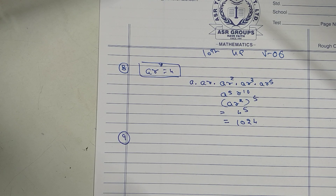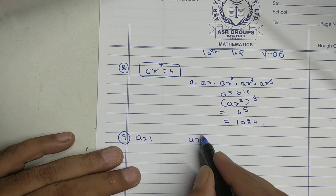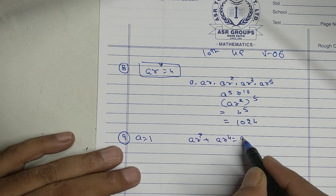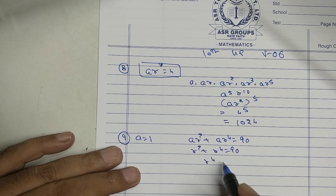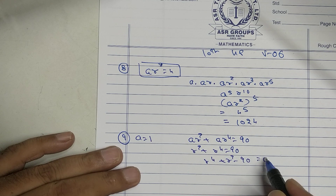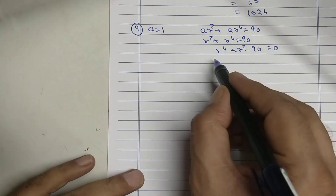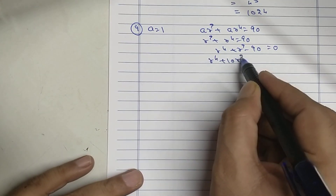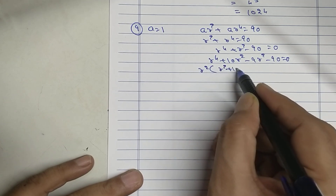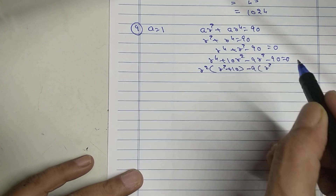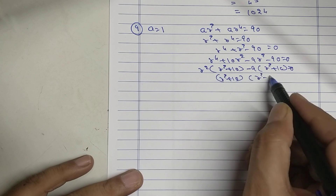Sum number 9. First term a is given. Sum of its third and fifth terms: ar squared plus ar to the 4th equals 90. Since a equals 1, r squared plus r to the 4th equals 90. This gives r to the 4th plus r squared minus 90 equals 0, a quadratic equation. Factoring: 10 nines are 90, 10 minus 9 is 1. So r to the 4th plus 10r squared minus 9r squared minus 90 equals 0. Taking r squared common: r squared(r squared plus 10) minus 9(r squared plus 10) equals 0.